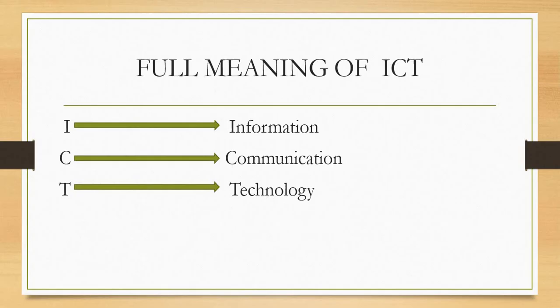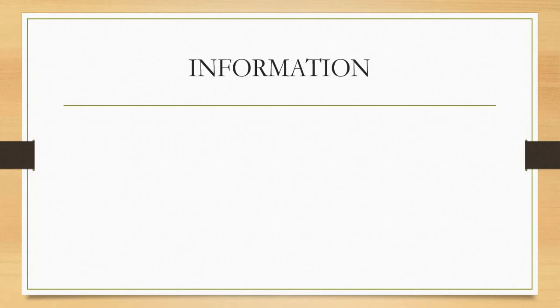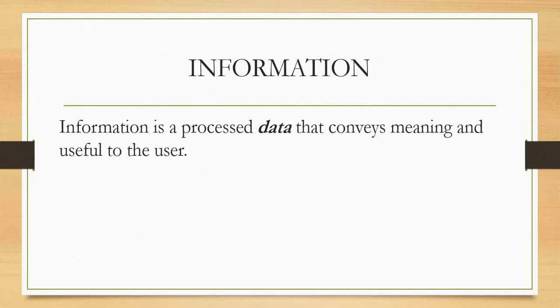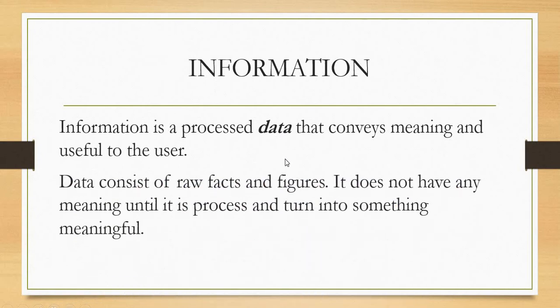Before we look at the definition of ICT, we have to first understand information, communication, and technology. Information can be defined as processed data that conveys meaning and is useful to the user. Data here means raw facts and figures, and it does not have meaning until it is processed and turned into something meaningful.